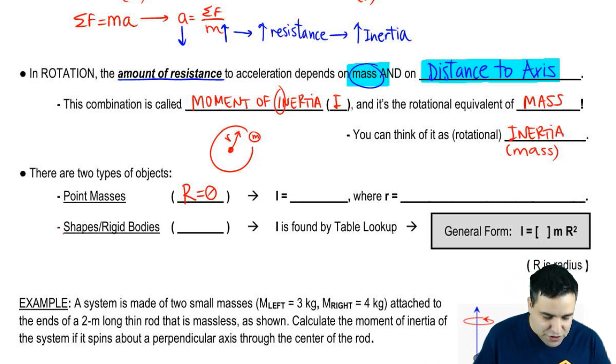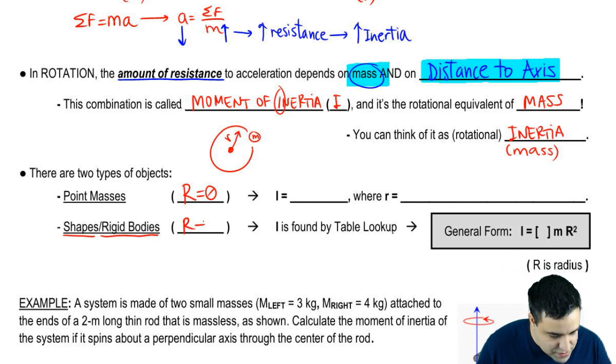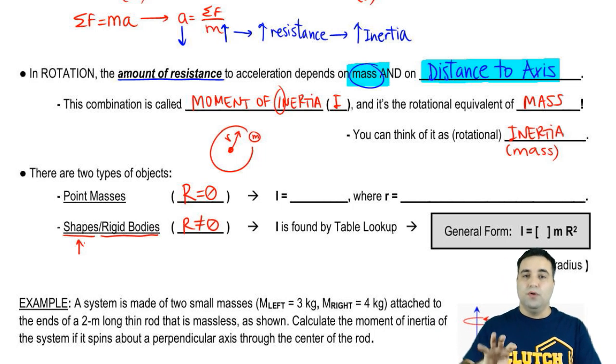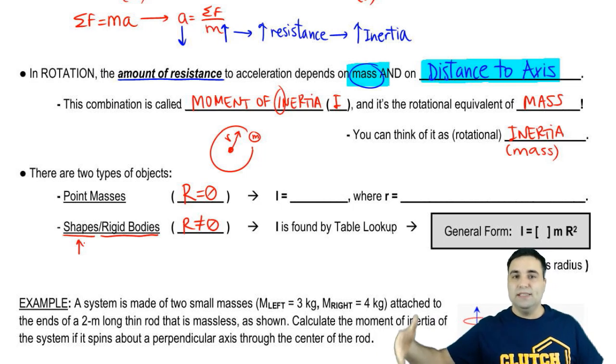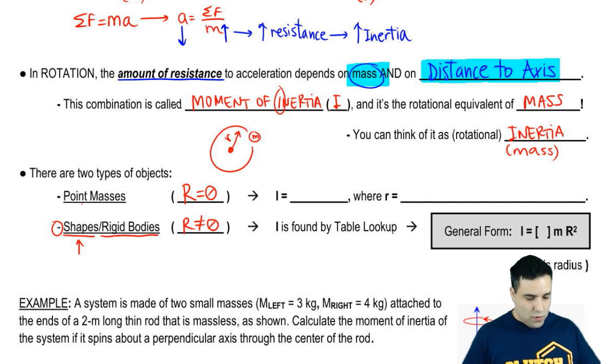And then the other type is when you have a shape or a rigid body. These are like a cylinder with a radius or something. So the radius here is not zero. And the reason I put shape is because the problem is usually going to tell you what kind of shape this is. It's a solid cylinder. If it says it's a solid cylinder, you know it's one of these guys and not a point mass.